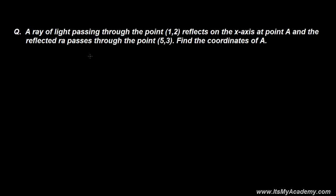Here I'm going to discuss a very interesting question based on the slope of a line. This is actually a physics question, but we are dealing with it in the straight line chapter. A ray of light passing through the point (1, 2) reflects on the x-axis at a point A, and the reflected ray passes through the point (5, 3). Find the coordinates of A.